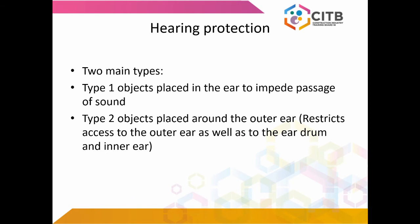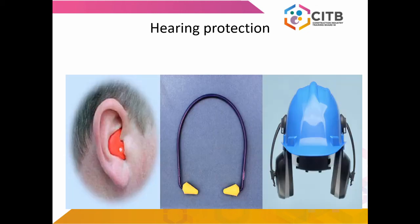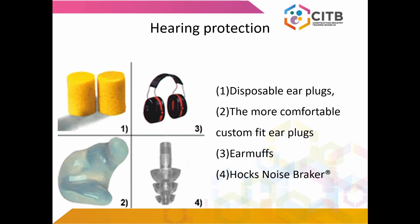Hearing protection — two main types. Type 1: objects are placed in the ear to impede the passage of sound. Type 2: objects placed around the outer ear, which restricts access to the outer ear as well as the eardrum and inner ear. Some typical types include: number one, disposable earplugs; number two, the more comfortable custom fit earplugs; number three, ear muffs; and number four, Hox noise breaker ear protection.